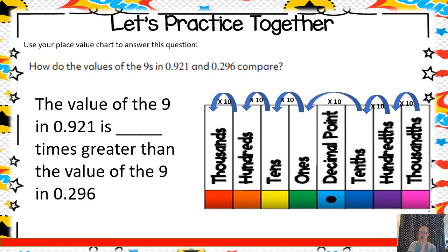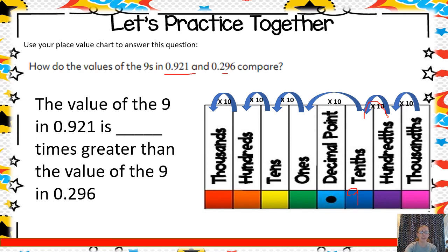So let's compare a couple of numbers. How do the values of the nines in 0.921 and 0.296 compare? In my first number, the nine is in the tenths place. In my second number, the nine is in the hundredths place. Comparing the tenths place to the hundredths place — that's one jump away. That means the value of the nine in the first number is 10 times greater than the value of the nine in the second number. One place away means one jump times 10.